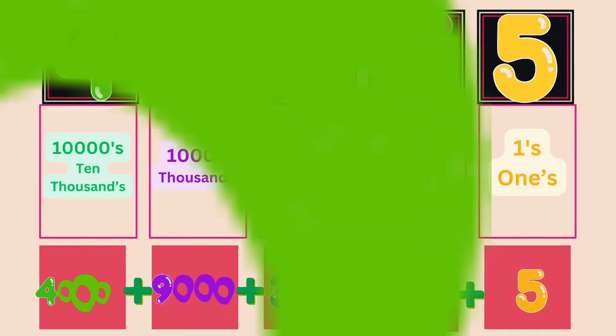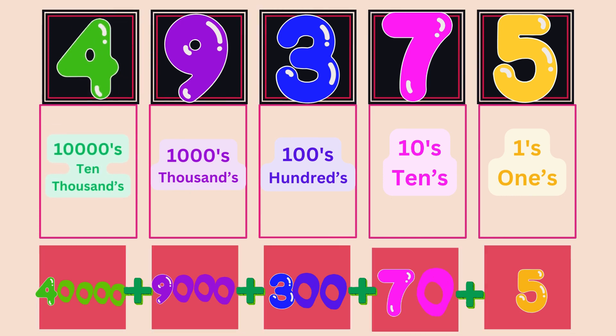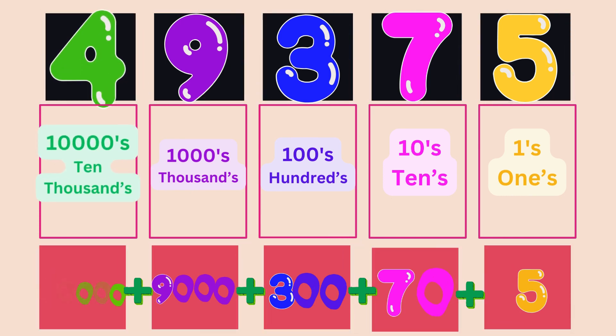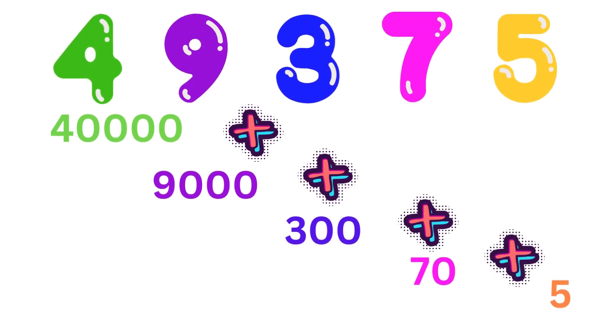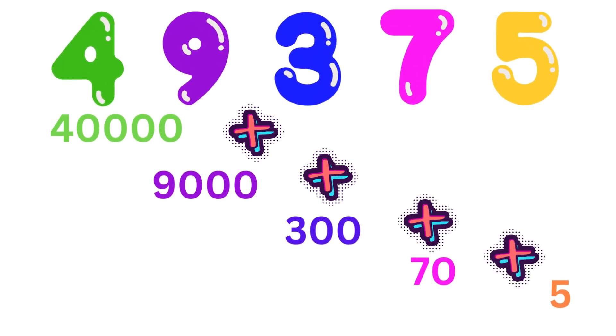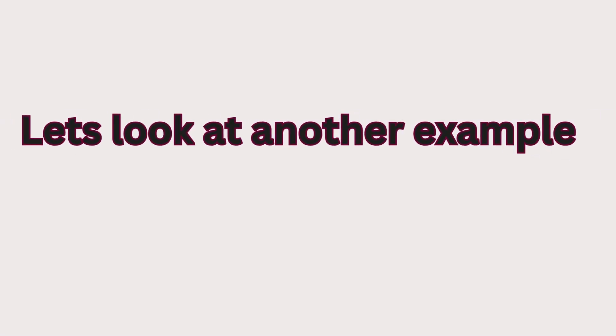The 4 sits in the 10,000s place, so it means 4 ten-thousands. 4 into 10,000, which is 40,000. So, altogether, 49,375 means 40,000 plus 9,000 plus 300 plus 70 plus 5. Let's look at another example.